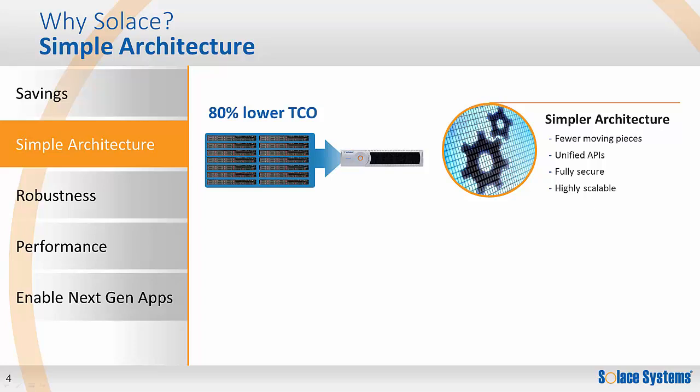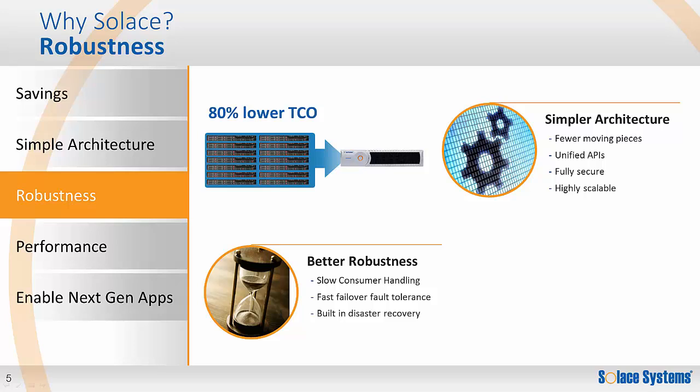It simplifies the architecture. Similar to Datapower appliances for integration, appliances for messaging is simpler rather than lots of software running on many servers, all being independently managed, maintained, and upgraded. It provides better robustness. The Solus message routers support automatic fault tolerance, integrated disaster recovery, and exceptional slow consumer handling.